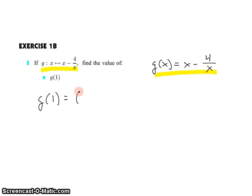So g of 1 is 1. So that's that x. 1 take 4 on 1. x take 4 on x, but x is 1. 4 divided by 1 is 4. So this is 1 take 4. And that's negative 3. So the value of g when x is 1 is negative 3.